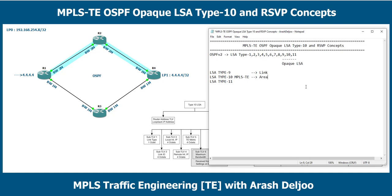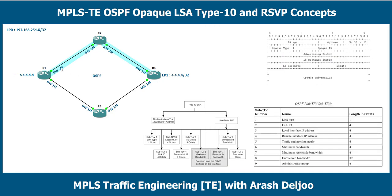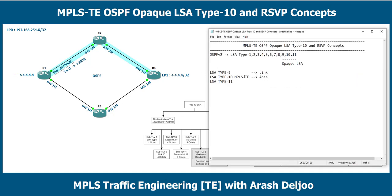LSA type 10's scope is one area, which is suitable for MPLS traffic engineering because we need to advertise link constraints — such as remaining bandwidth — within one area. For example, if a tunnel on R1 is configured with 1200 kilobits per second reserved bandwidth, the remaining bandwidth on R1's FastEthernet 0/0 becomes 800 kilobits per second. R1 needs to advertise this remaining bandwidth to other routers in the area using LSA type 10, and router R4 can receive it.